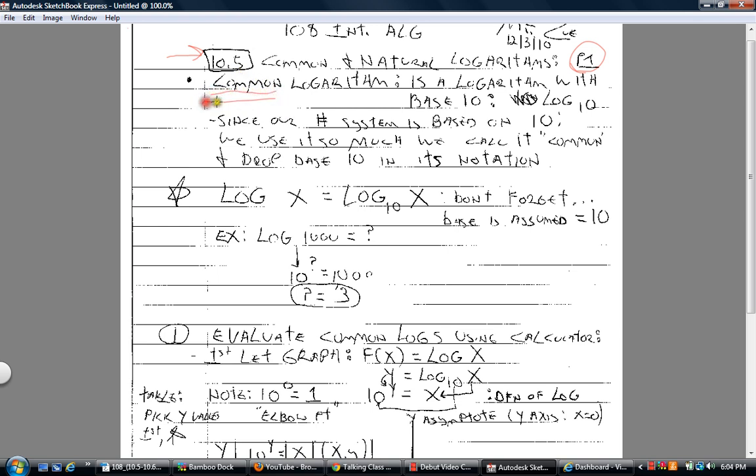Okay, now we're getting a lot of new terminology, but common means that we see it so much in our number system of base 10. 10 to the 0 equals what? 1. 10 to the first equals 10. 10 squared equals 100. Okay, and so mathematicians decided, since we use it so much, it's so common, that we are now going to take log base 10 result x and drop the base. You don't have to write the base if it's a 10. It's now assumed to be there.